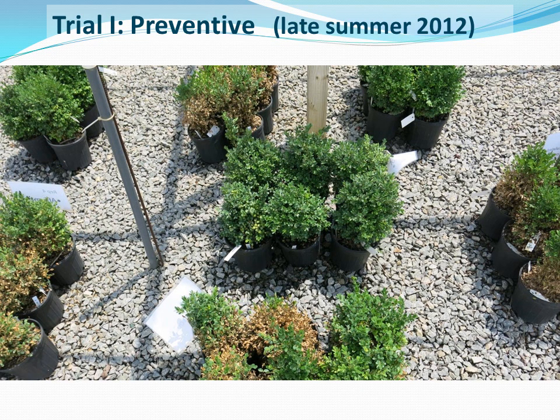We started conducting cultivar and fungicide trials in the summer of 2012. Our first fungicide trial involved one-gallon English boxwood. All treatments were applied before exposure to the fungus, roughly one to two days prior. Products were applied on a 14-day interval using a CO2 backpack sprayer at 50 to 60 psi.